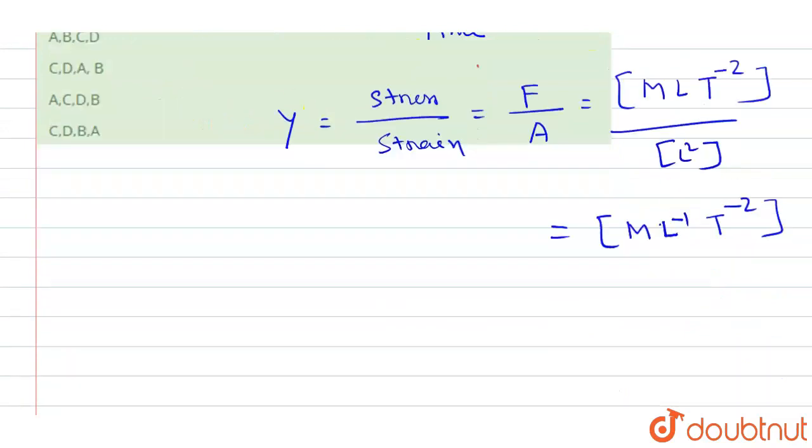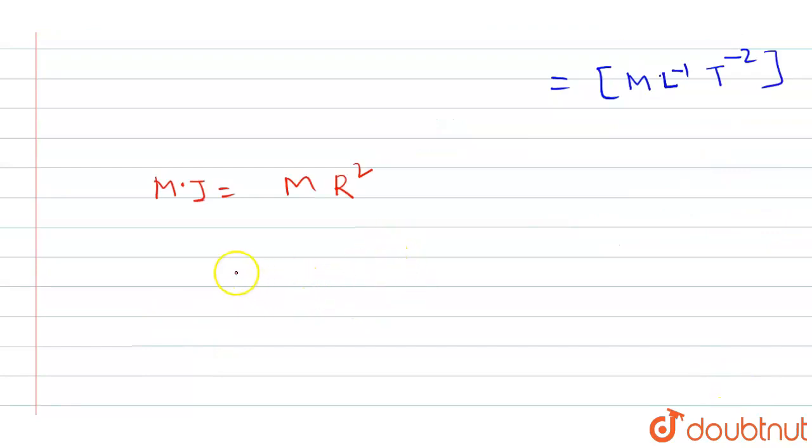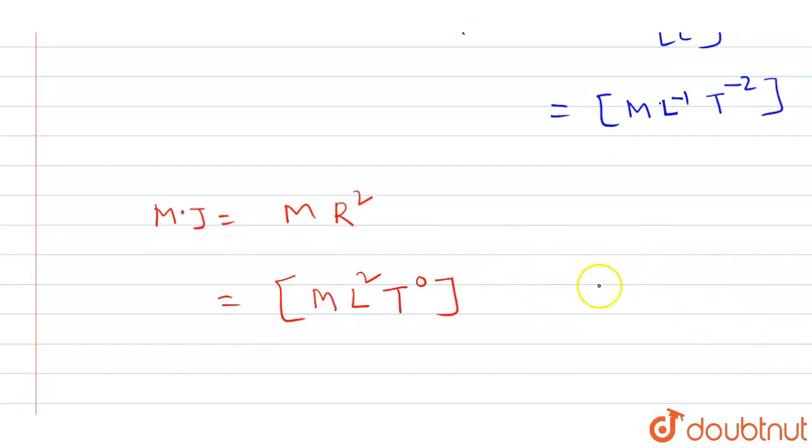Moment of inertia - the formula is mass of the object in rotational motion and from the rotational axis this mass has a distance of r. So Mr² is the moment of inertia. Now dimension will be mass M, and for radius it is L² into T⁰. So moment of inertia dimension is ML²T⁰.